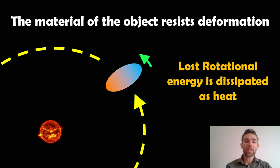So what happens is basically as it's rotating, the material itself wants to resist that deformation. It's trying to be stretched and squeezed as it's rotating. That obviously resists that. There's some friction there and that slows the rotation and that lost rotational energy is dissipated as heat in the object.